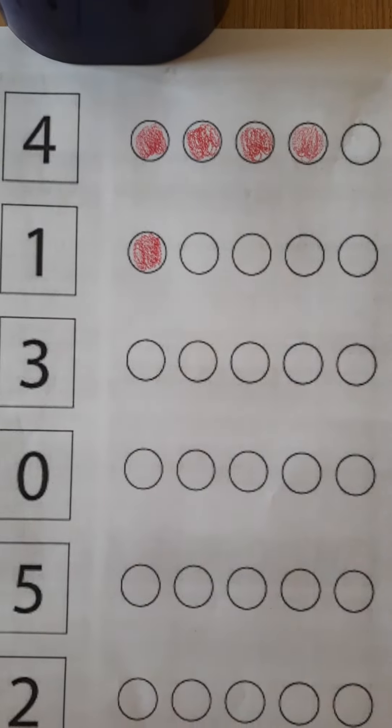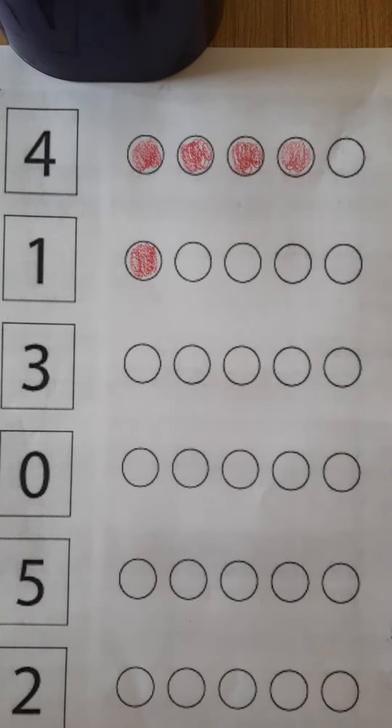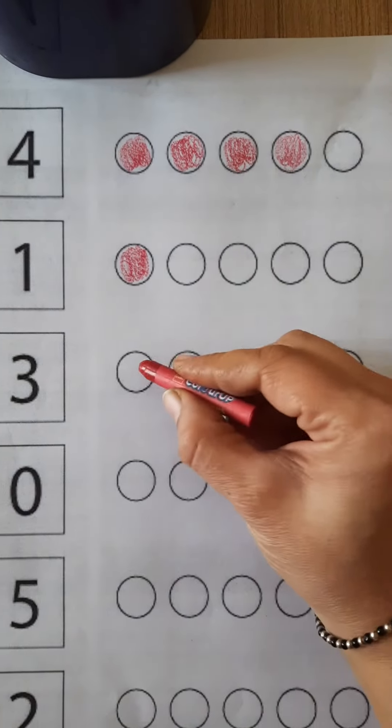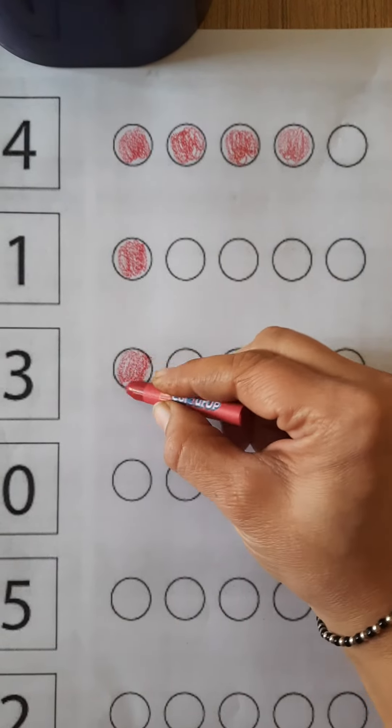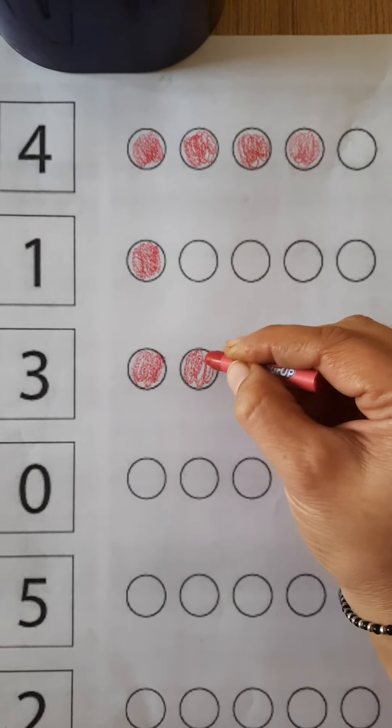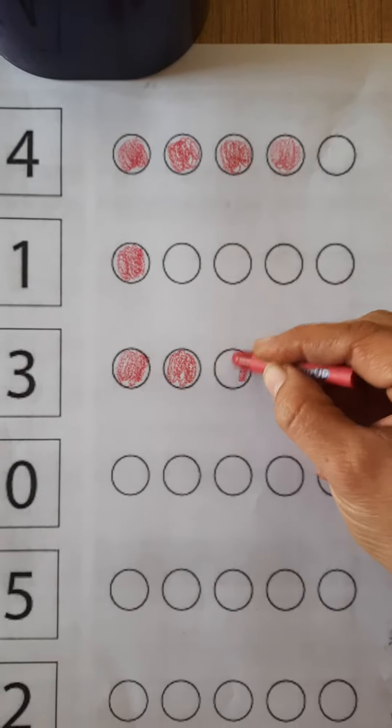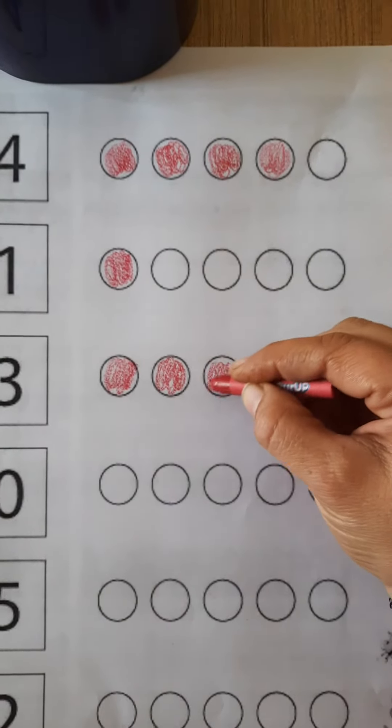3. Now we will color in 3 circles. Like this. Start from here. 1, 2, 3. Yes.